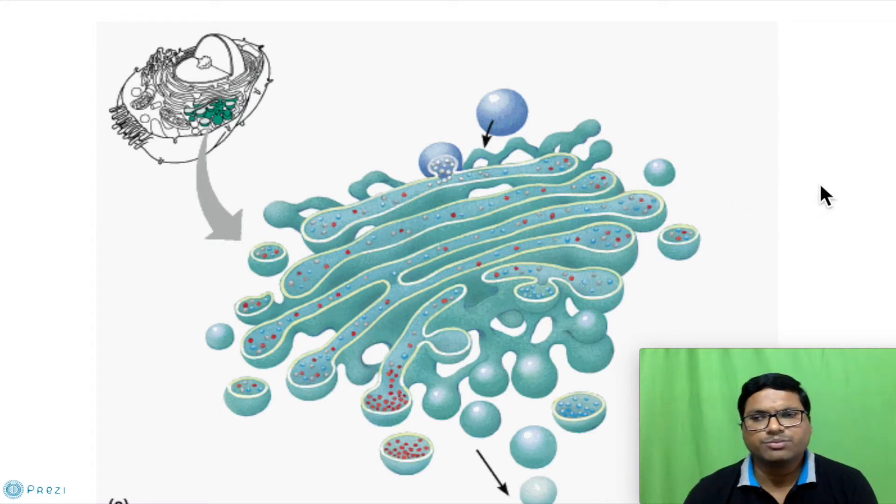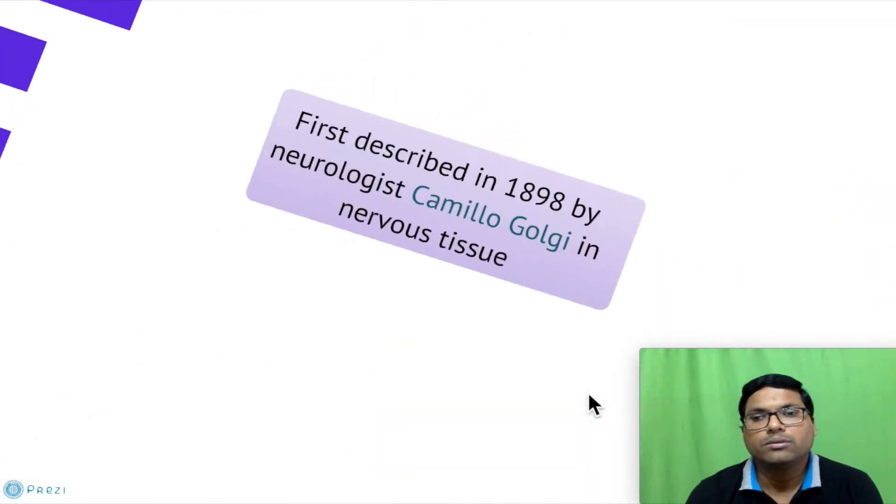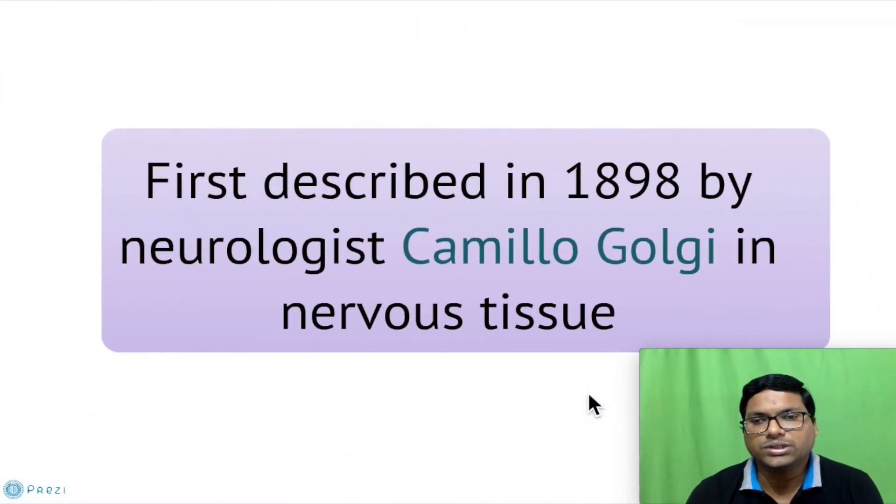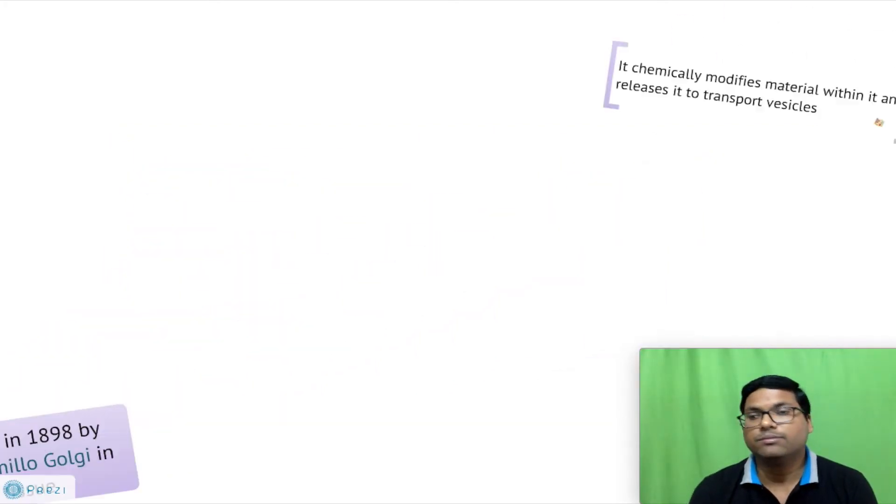It consists of a special structure called cisternae, which are sacs like we have seen in case of endoplasmic reticulum. It has two faces: one directing towards the endoplasmic reticulum and the other directing towards the other side of the cell. It was first described in 1898 by neurologist Camillo Golgi, so that's why the name derived from the first discoverer.